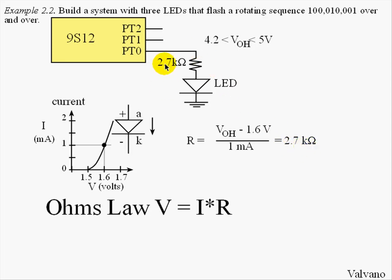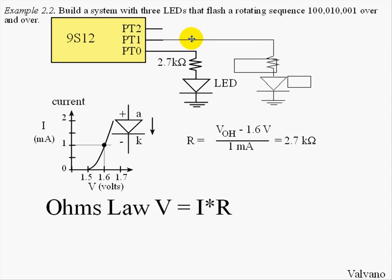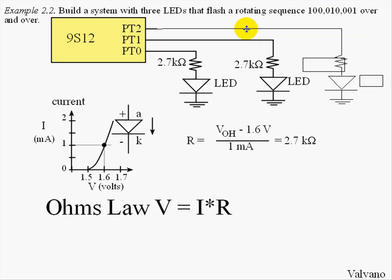That resistance will be about 2.7K. In other words, a 2.7K resistor placed in series with the LED will give it about 1 milliamp of current when the output is high. We'll repeat this for two more circuits, one for port T bit one and one for port T bit zero. And now we're done with the hardware.